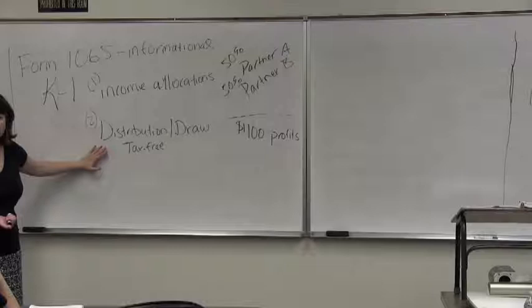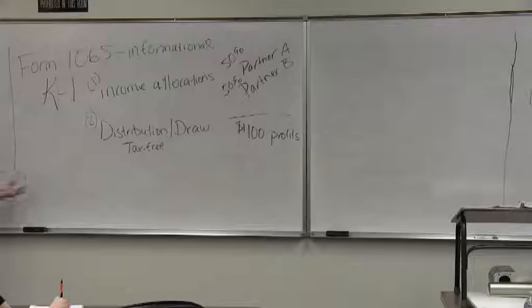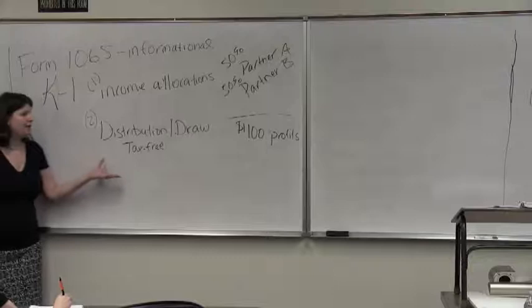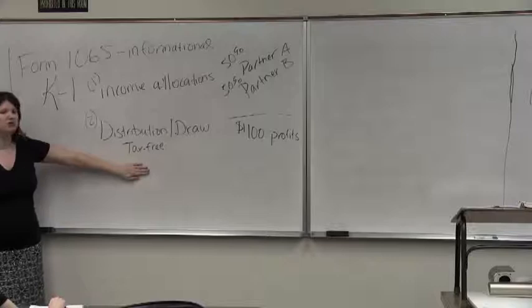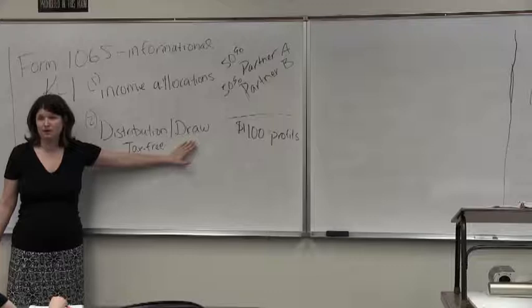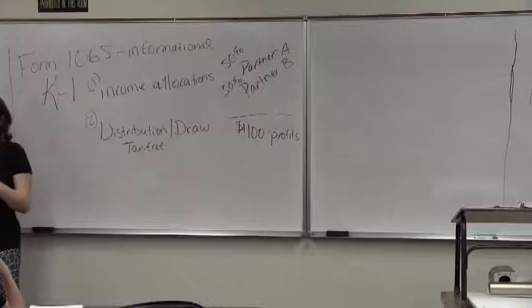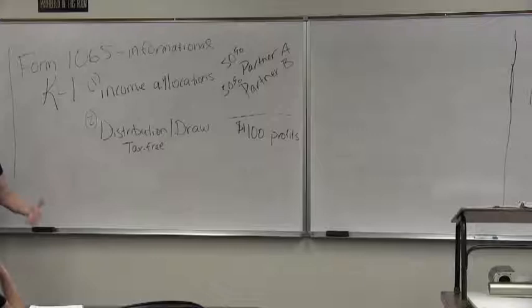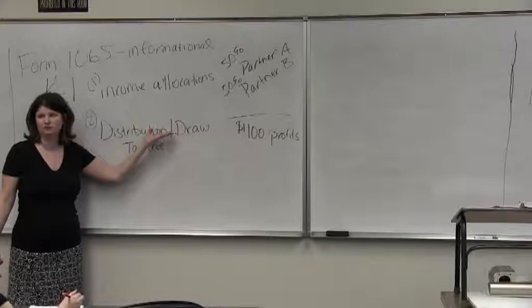This is why it's important to read partnership agreements for clients — a well-drafted agreement will say the partner receives at minimum a distribution to cover their tax liability. A draw and a distribution are essentially the same thing, the difference is timing: a draw comes before the allocation and is an advanced distribution. Draws are common with law firms and accounting firms because partners can't go all year without income, so they take a monthly draw.